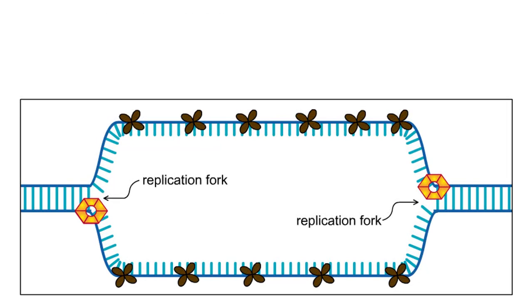When they are separated, the two single DNA strands can act as templates for the production of two new complementary DNA strands.